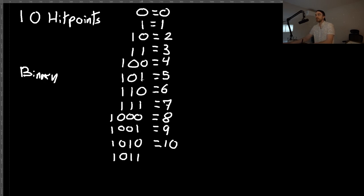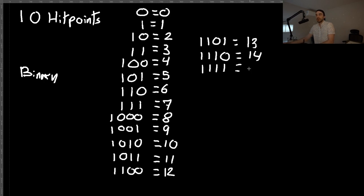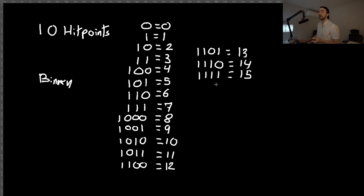We carry left when we can't increment a slot. For example, carrying over when a slot can't take it gives us twelve, then thirteen, fourteen, and finally fifteen — expressed as one-one-one-one. There is a total of 16 different values you can express using four binary slots.